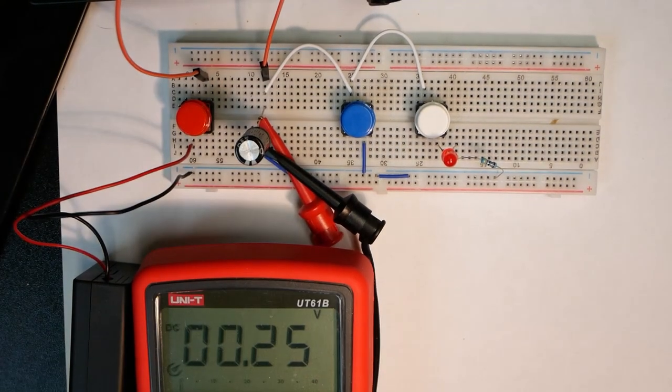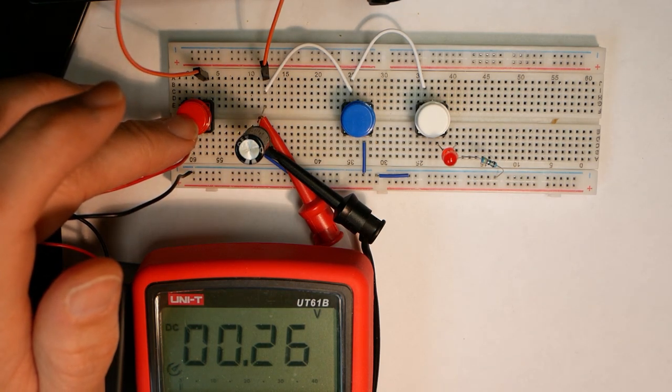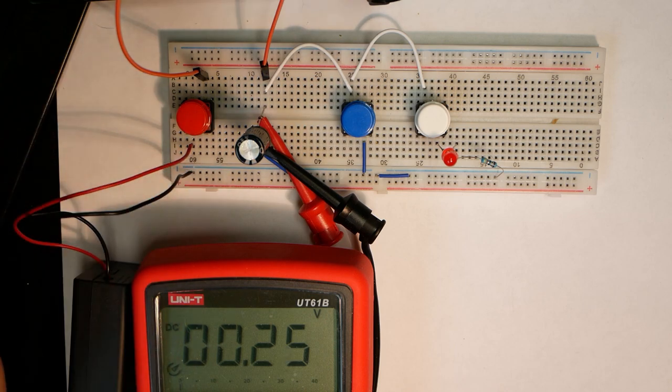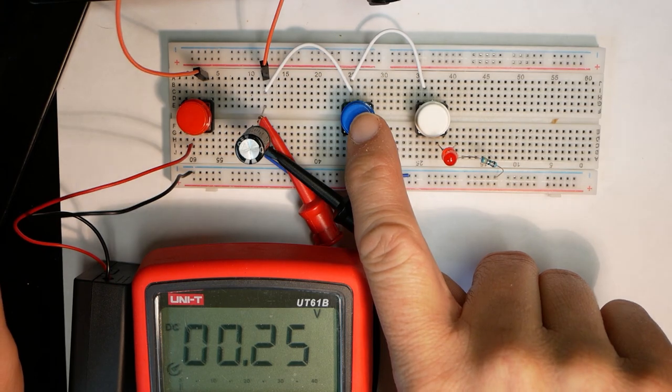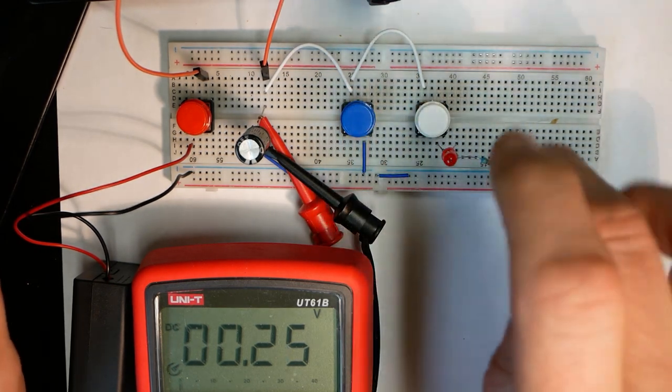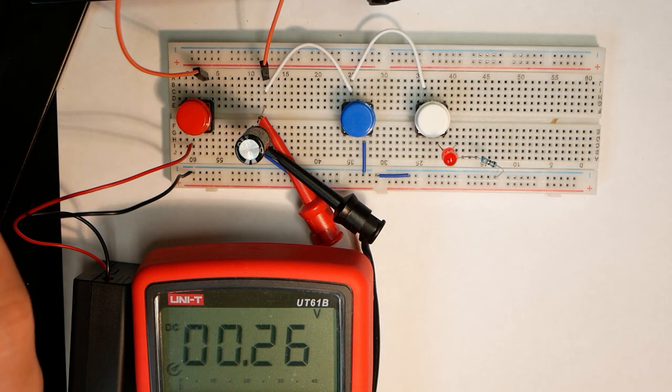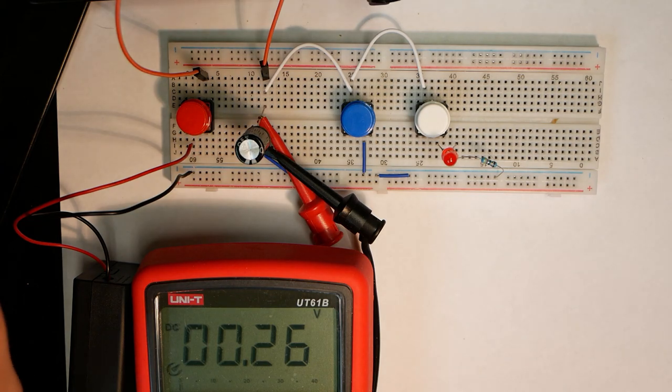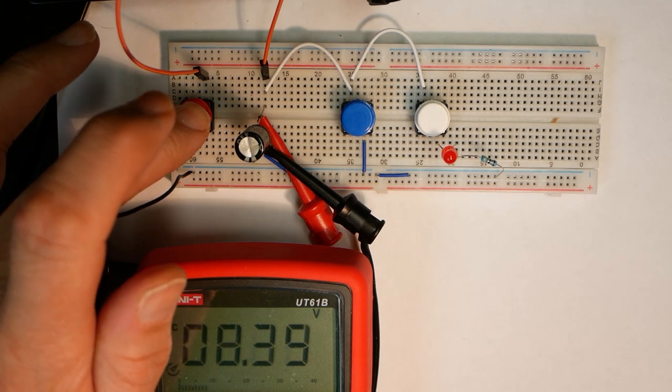A 1000 microfarad capacitor. And I've got a 9 volt battery. And the red button fills it with voltage. And the blue one will short it to ground. It means it empties the capacitor. And this one will empty the energy into the light emitting diode. So let's see what happens when we charge it up.